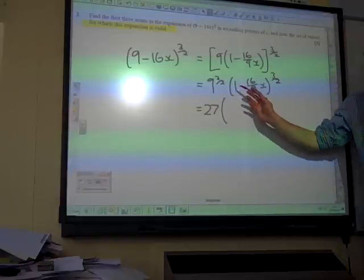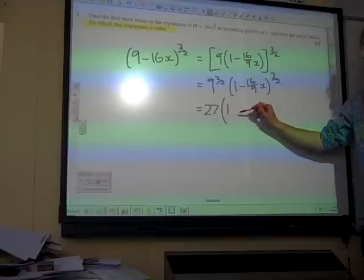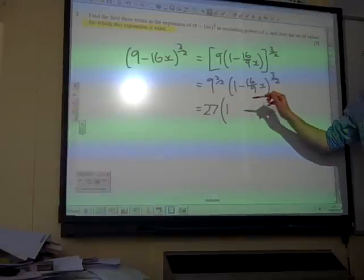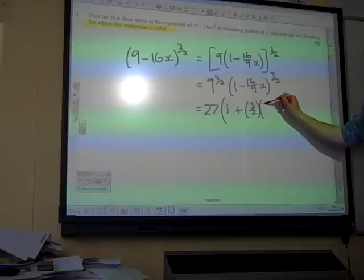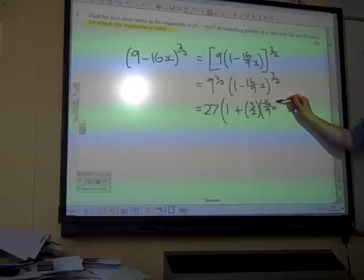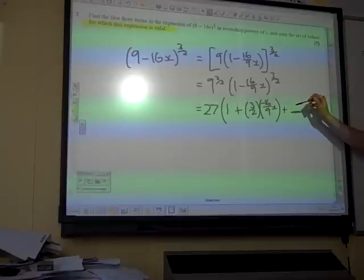We've got 1 minus 16 ninths of x that we're expanding, which is going to be 1, plus n times x. So plus 3 over 2 times minus 16 ninths of x, plus n times n minus 1.